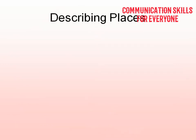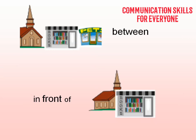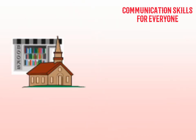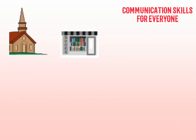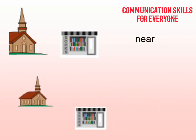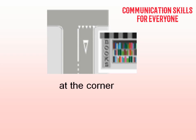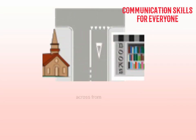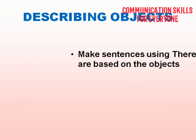Next, describing places. When you want to describe where a place is, you can say: the bookstore is between the church and the park, in front of the church, behind the church, next to the church, near the church, far from the church, at the corner, on the corner, or across from the church.